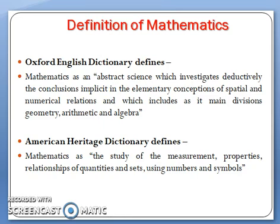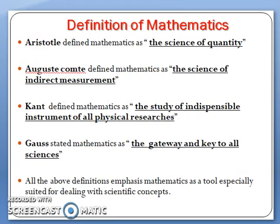Mathematicians define mathematics in different ways. Aristotle defined mathematics as the science of quantity. August Kammer defined mathematics as the science of indirect measurement. Kant defined mathematics as the indispensable instrument for all physical researchers. Gauss stated mathematics as the gateway and key to all the sciences.